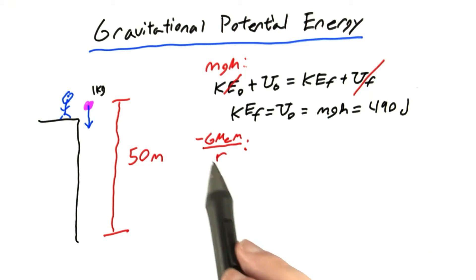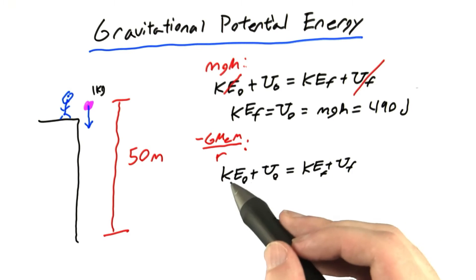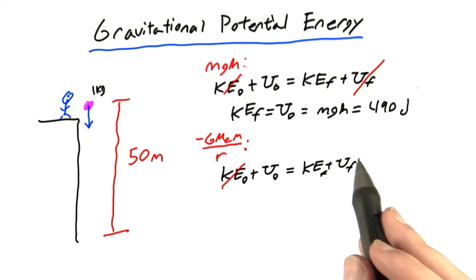Now let's repeat that calculation, except this time we'll use the more general formula for gravitational potential energy. So once again we start with conservation of energy, and just like last time, the initial kinetic energy is 0. Now this time we can't say that the final potential energy is 0, because our formula is slightly different.